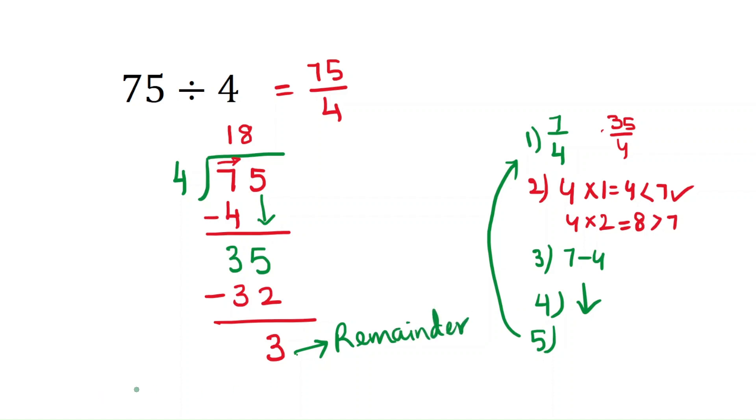If you want to check, you have to use the division formula: dividend equals divisor times quotient plus remainder. Here dividend is 75 equals to 4 times 18 plus 3. 72 plus 3 makes 75. Whatever you have done, the division is correct.